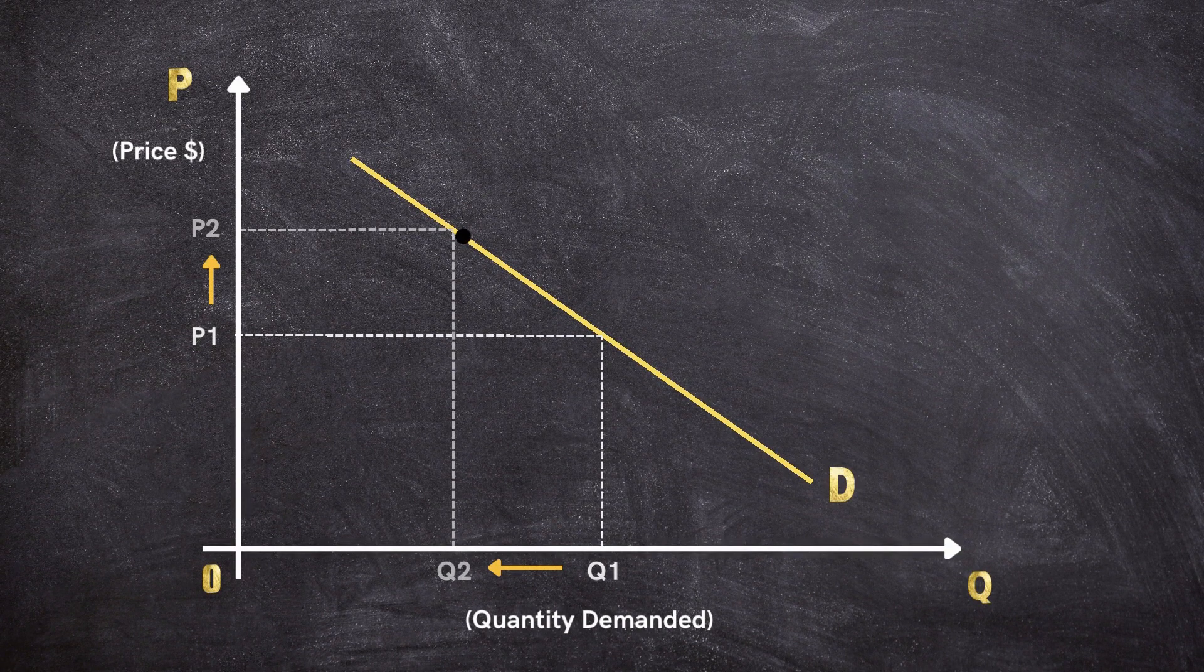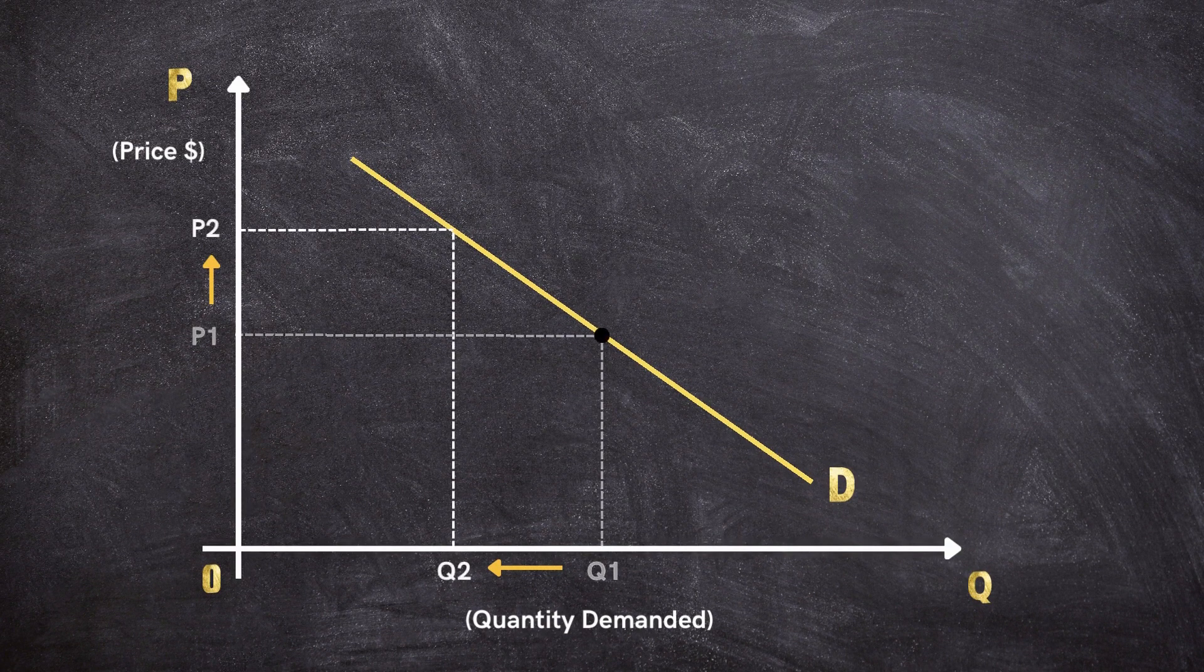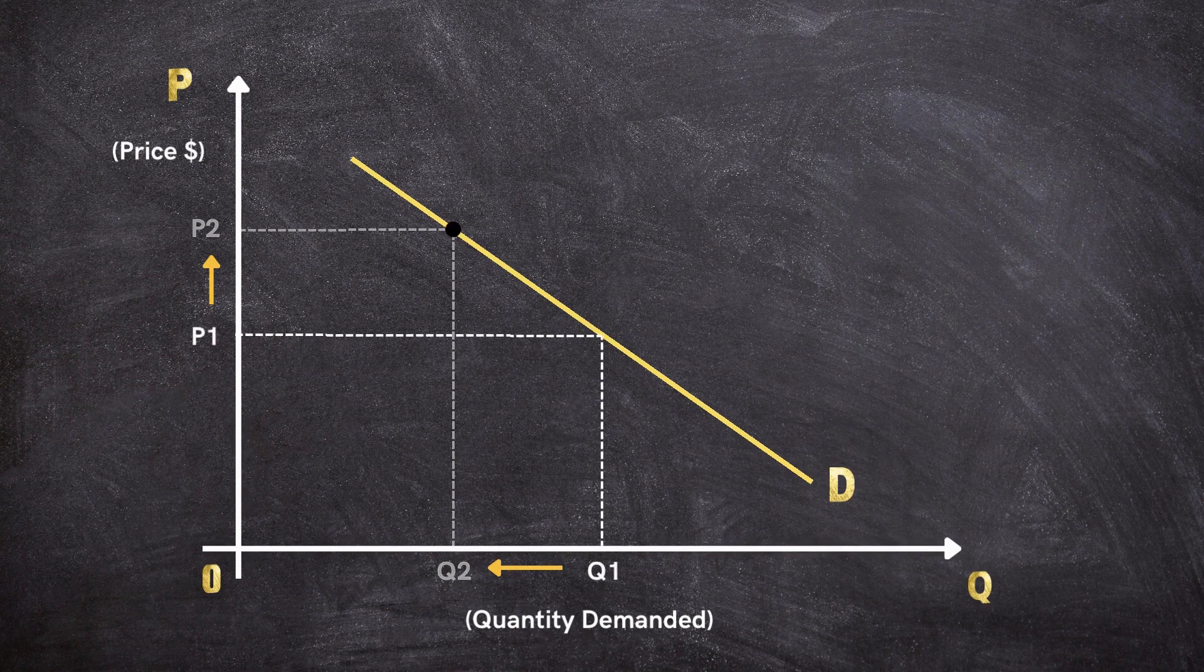Notice that as you move along the curve from left to right, the price changes, and correspondingly, the quantity demanded changes.